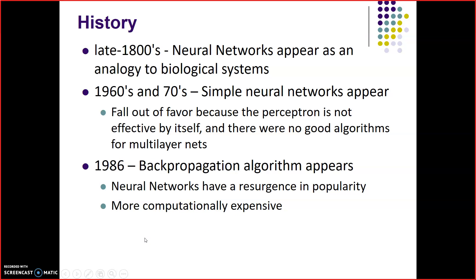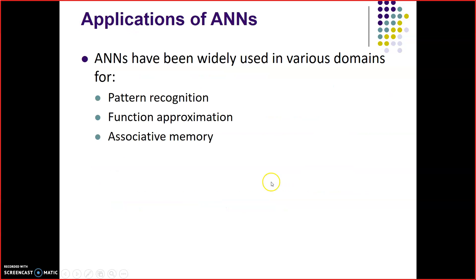A small history of artificial neural networks: in the late 1800s, neural networks appeared as an analogy to biological systems. In the 1960s, simple neural networks appeared. In 1986, the back propagation algorithm appeared. Some real life applications of artificial neural networks: ANNs have been widely used in pattern recognition, function approximation, and associative memory.